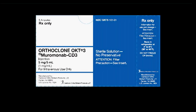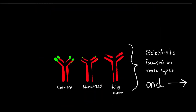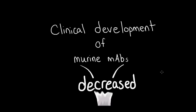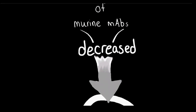In the first introduction video, we talked about muromonab and how it was used to treat transplant rejection. Although it was the first of its kind, muromonab and other murine-derived monoclonal antibodies had low efficacy since our bodies tend to create antibodies against these mouse proteins, resulting in side effects. That's why scientists shifted their focus to the other three types, and clinical development of murine drugs decreased drastically until it dropped to virtually zero in 2003.